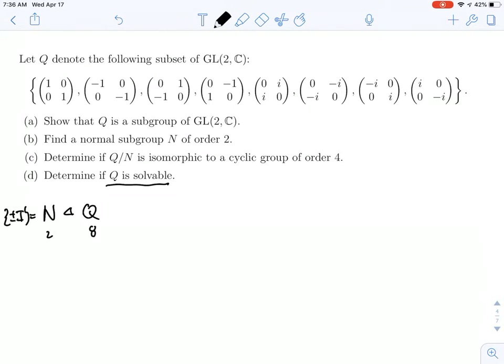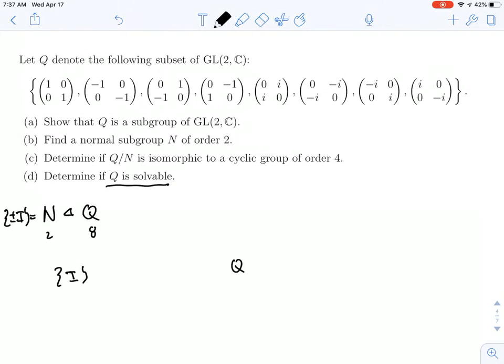All right, well, if I want to prove that Q is solvable, then I need to build a subnormal series with abelian quotients. So I could always start by taking the identity on one side and putting Q on the other side. And I know that the identity subgroup is normal in any group, so this will be normal in my N.